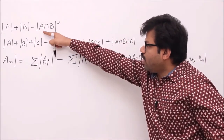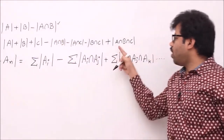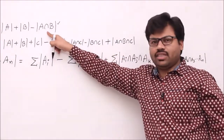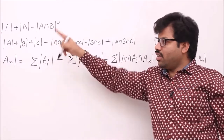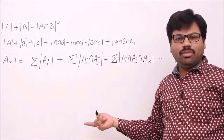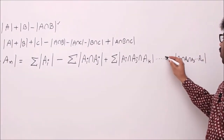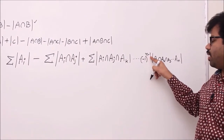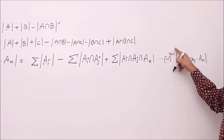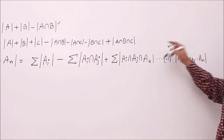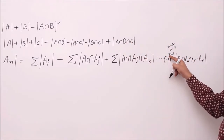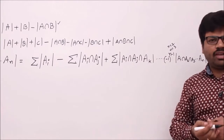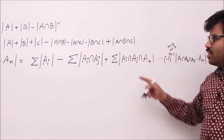You can see the pattern: for the last component with three elements it is positive, with two elements it is minus, for four it will be plus. So the sign is (-1)^(n-1), which takes care of parity. If n=2, then n-1=1, which is odd, so it's negative. If n=3, n-1=2, which is even, so it's positive. This is the formula we are going to use to solve a lot of problems.